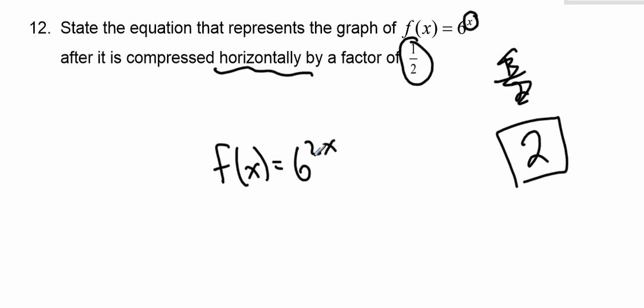So the equation would be f of x equals 6 to the 2x. So again, the change is inside where the x is, and it's the opposite of what we want.